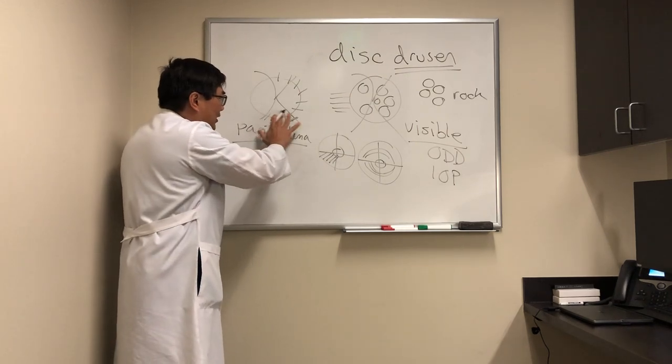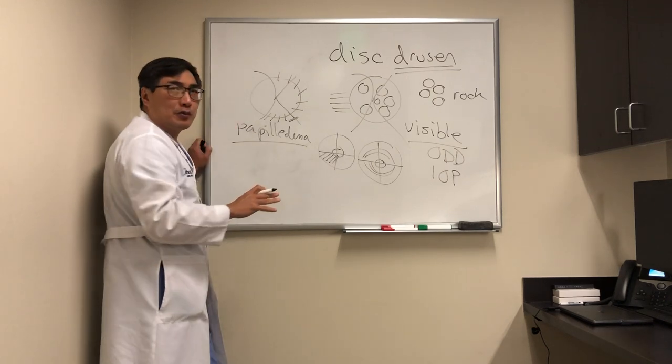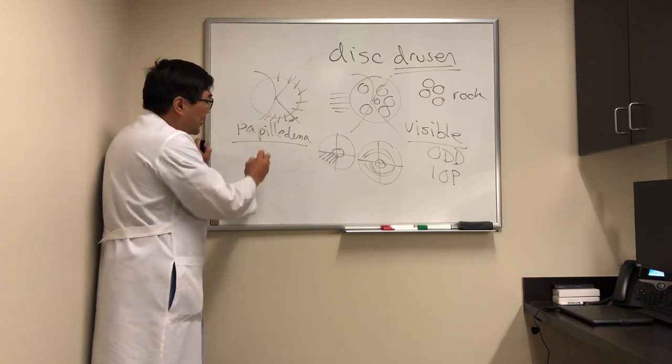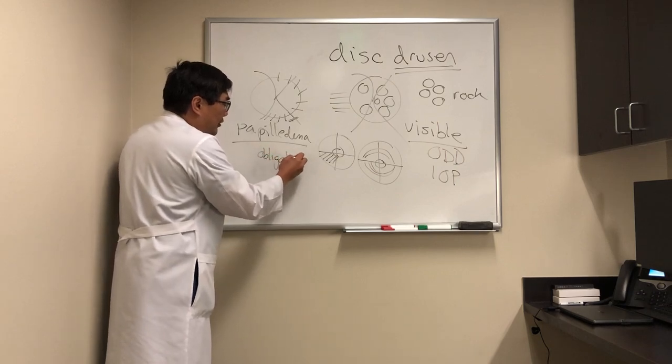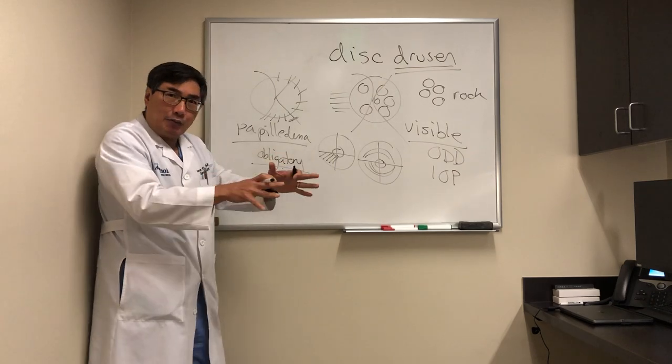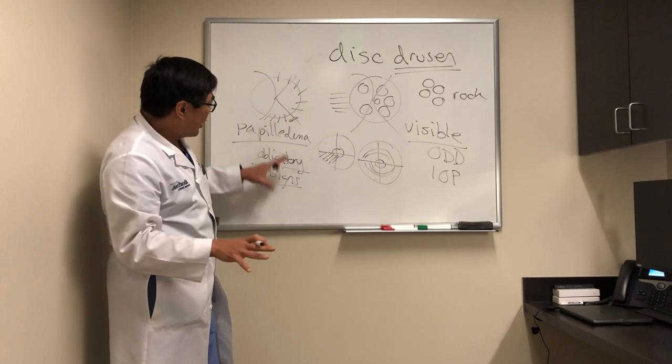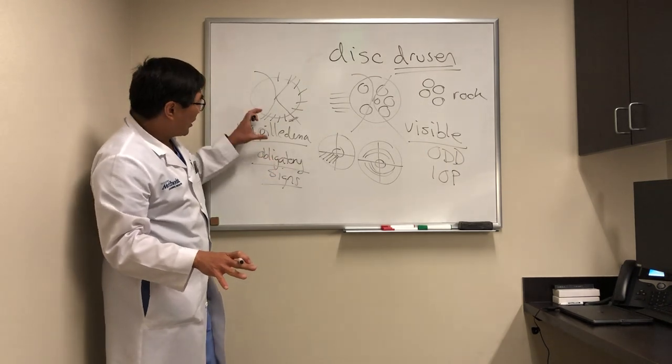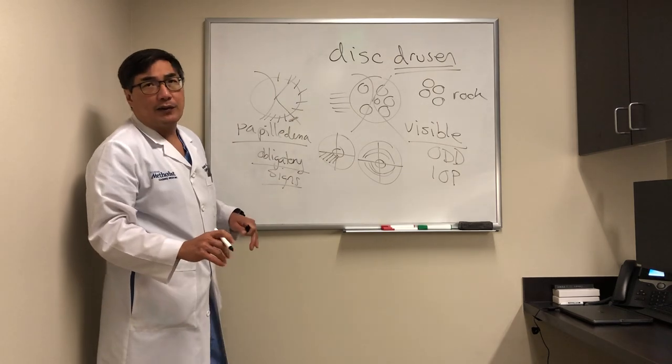But if we see the obscuration is in the nerve fiber layer and obscuring the blood vessel, that's going to be more suggestive that it's true disc edema. The other things that are obligatory signs that you're dealing with true papilledema are pathologic signs like hemorrhage, exudate, subretinal fluid. If we see those obligatory signs, then we're going to be leaning towards true papilledema or other causes of disc edema, and away from disc drusen.